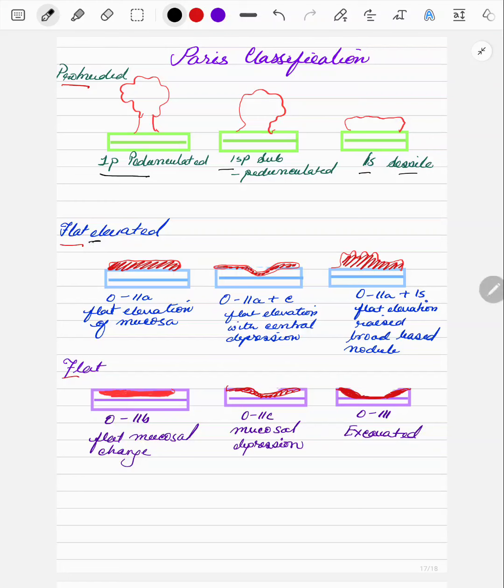So if they are flat elevated, now E stands for A and basically you think of the vowels stick together. That's how I remember it.